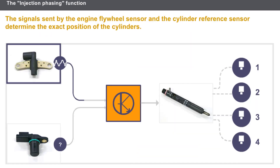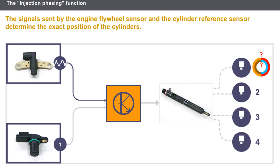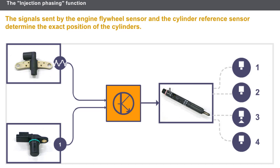The signal sent by the flywheel sensor is used to determine the top dead center of cylinder number one. In this position, cylinder number one may be at the start of induction or at the end of the compression phase. The signal from the cylinder reference sensor allows these two positions to be distinguished, so the computer can actuate the injector at the right moment and in the correct sequence.